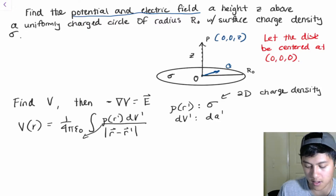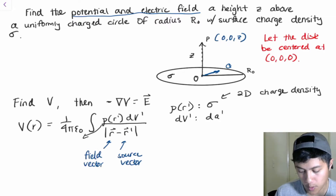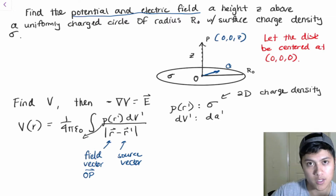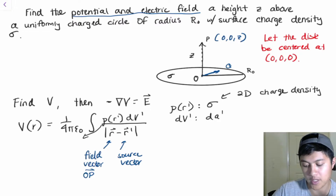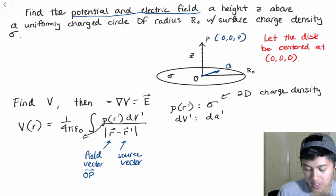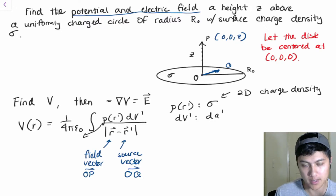Now let's look at the two vectors in the denominator. The unprimed r is known as the field vector, and r′ is known as the source vector. In our picture of the disk, the field vector is just an arrow pointing from origin O to point P — so it points from the origin to the point of interest. The source vector r′ points from the origin to the source point Q, and we're going to give those components in just a moment.